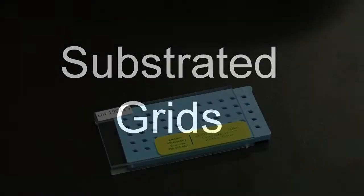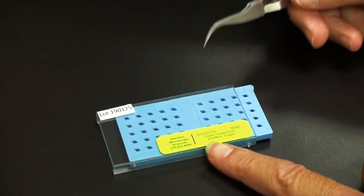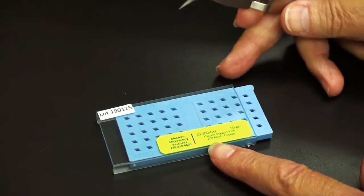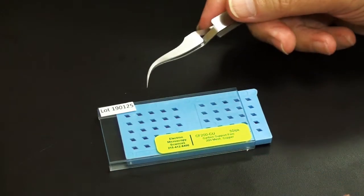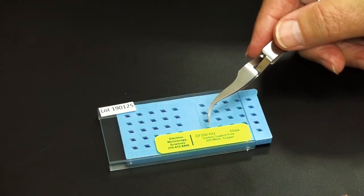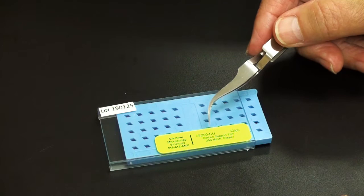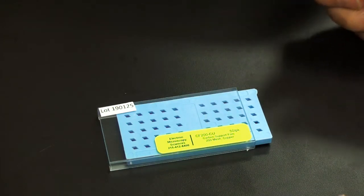This video covers the use of substrated grids for TEM. I'm using 200 mesh copper grids. They come in nickel and gold and meshes from 150 to 1500, but I'm going to be using these 200 mesh grids.